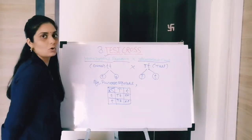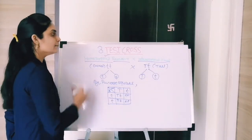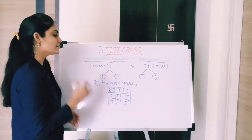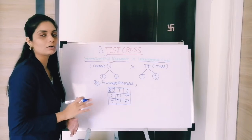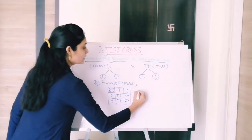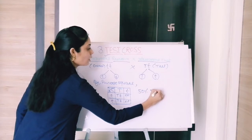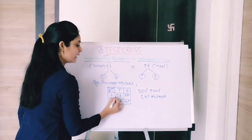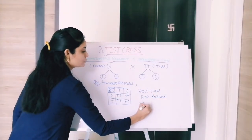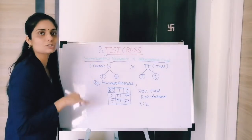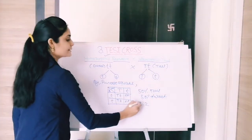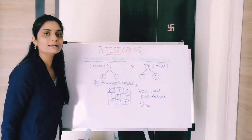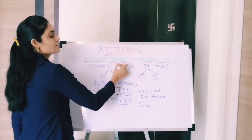If we calculate the phenotypic ratio of the test cross, we get 50% plants are tall and 50% plants are dwarf. The genotypic ratio is also two is to two. So both the genotypic and phenotypic ratios are the same — two is to two.